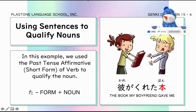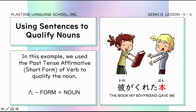Kare ga kureta hon — again, instead of just saying hon or libro, diniscribe natin yung libro, which is libro na binigay ng boyfriend. Tandaan lang natin na ang particle ng person na gumawa ng isang verb, kapag ito ay nasa qualifier noun, is particle ga — gaya ng example dito — and not particle wa.